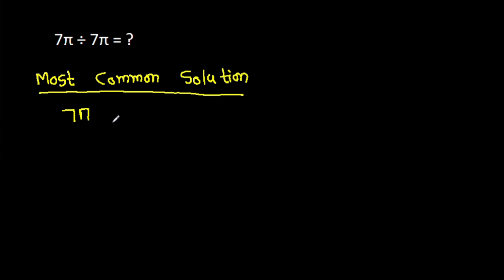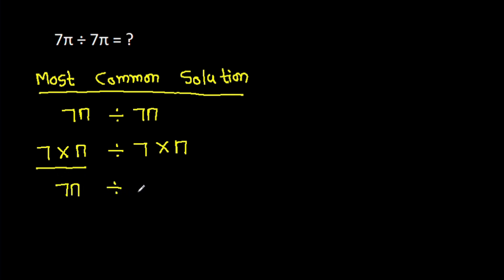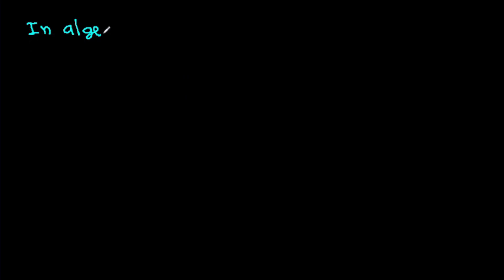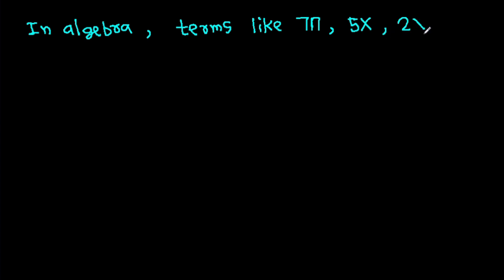Now, what is 7π divided by 7π? The most common wrong solution: 7π divided by 7π is treated as 7 times π, divided by 7π. Then 7π divided by 7 is π, times π, giving π squared. But again, this is wrong, because in algebra, terms like 7π, 5x, 2x squared — 7π is a single term.